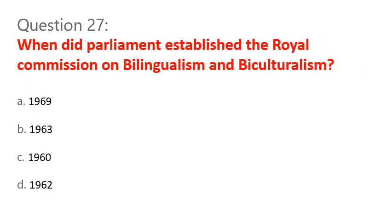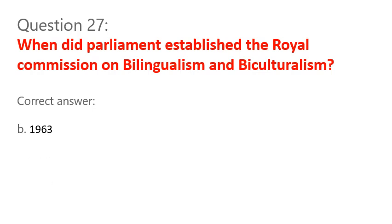Question 27. When did Parliament establish the Royal Commission on Bilingualism and Biculturalism? A. 1969. B. 1963. C. 1960. D. 1962. Correct answer: B. 1963.